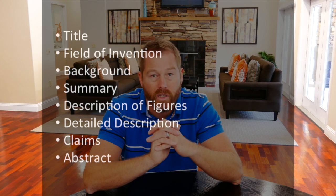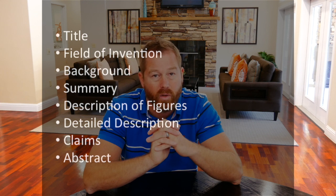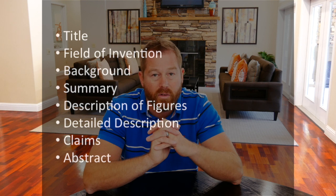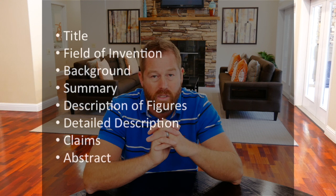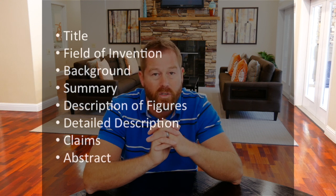The description of the figures provides a listing of all the figures and, in one sentence or less, what they are and what they're showing. Then the detailed description describes all the aspects of your invention. And then finally, you have a section called claims. Claims provide your legal entitlement — or what you believe is your legal entitlement — to the invention.